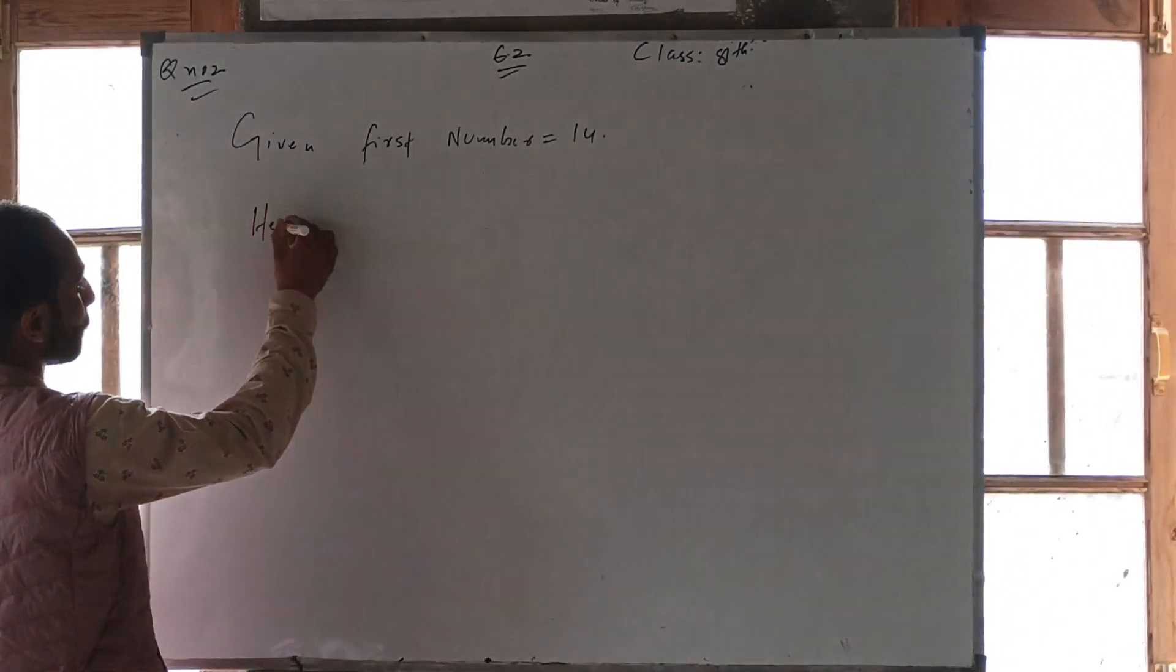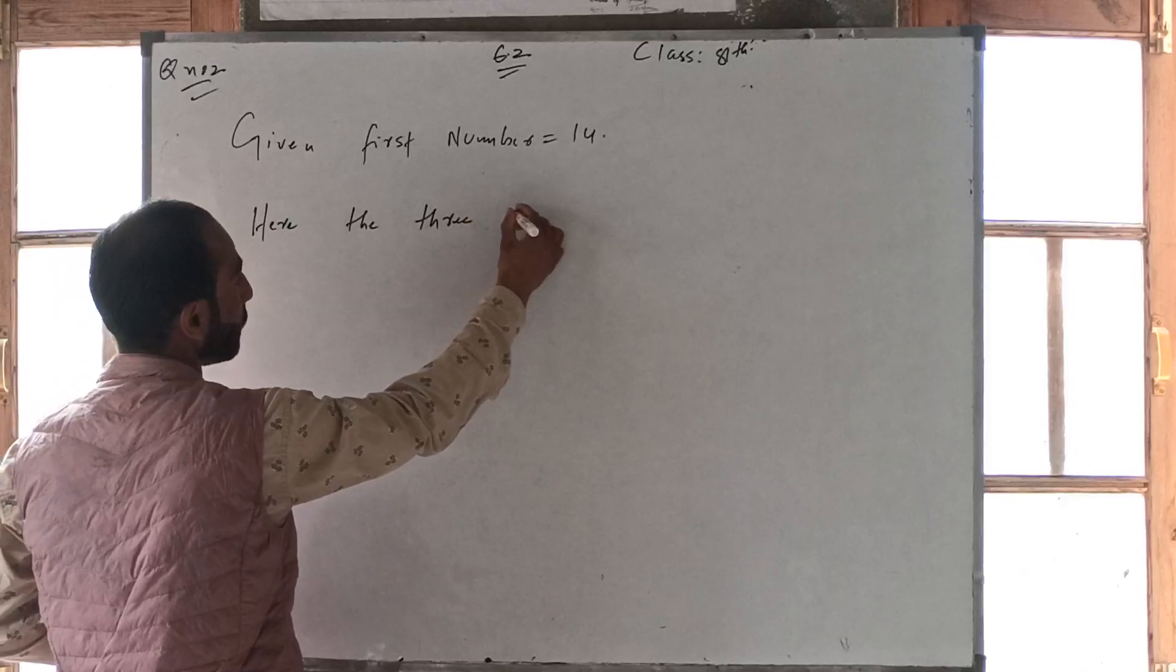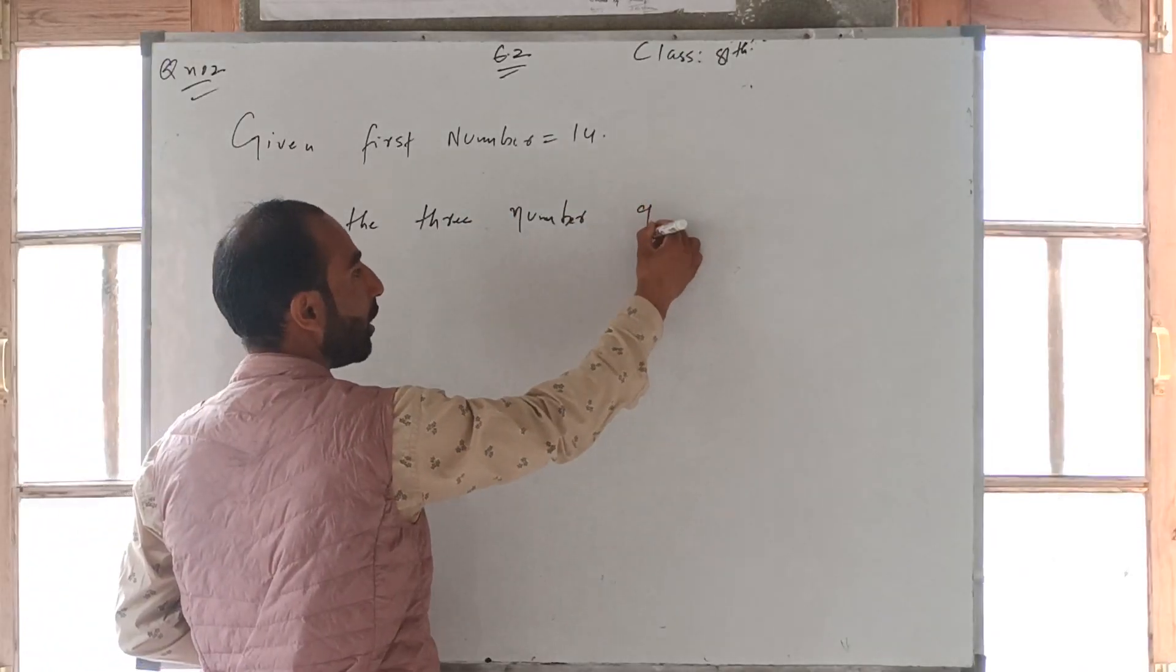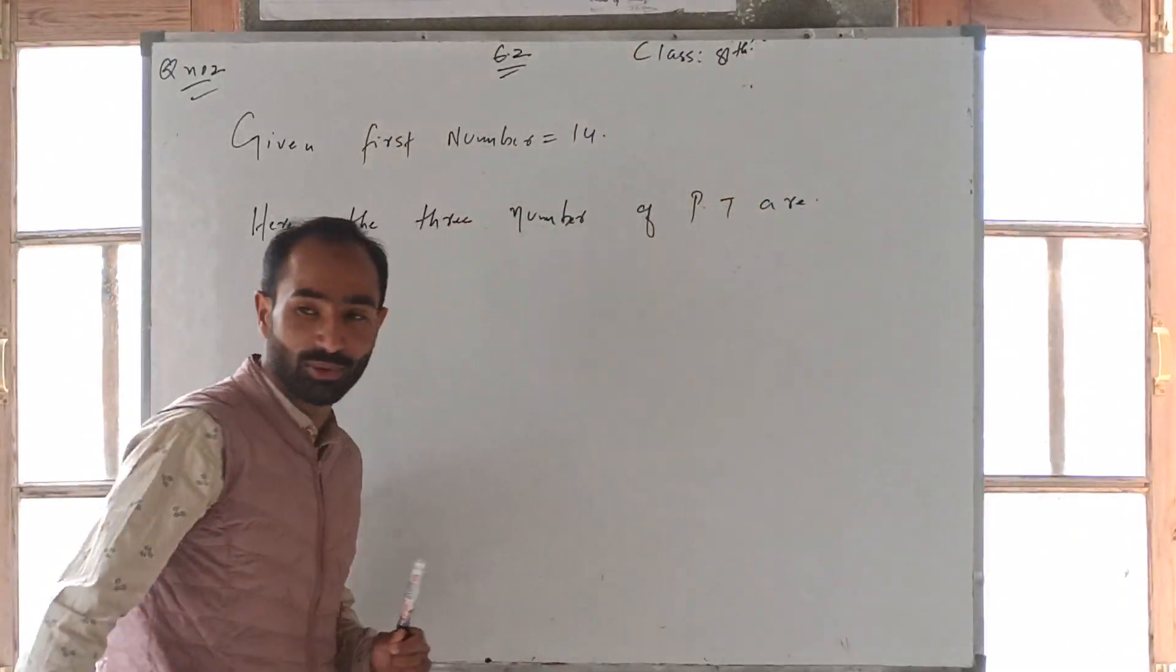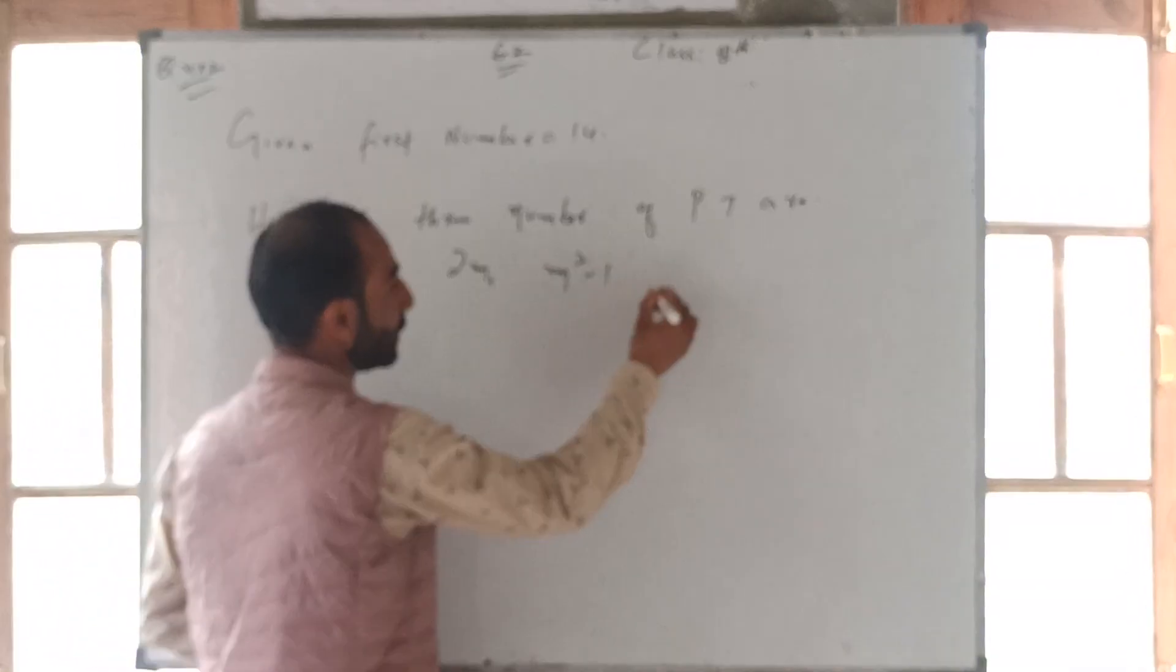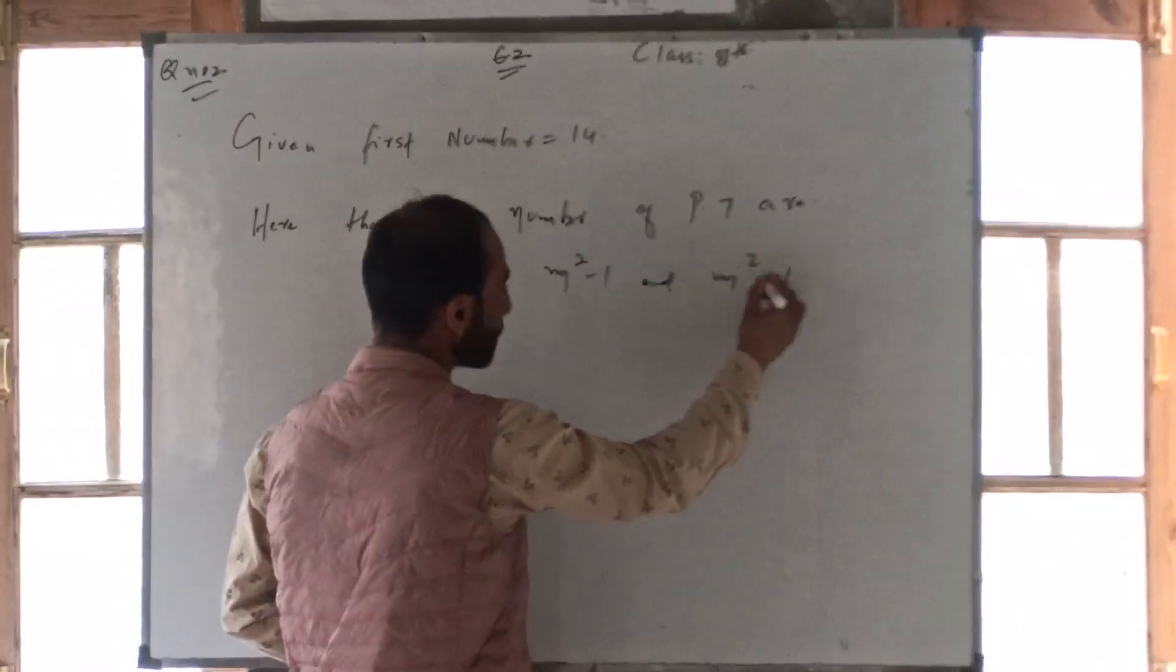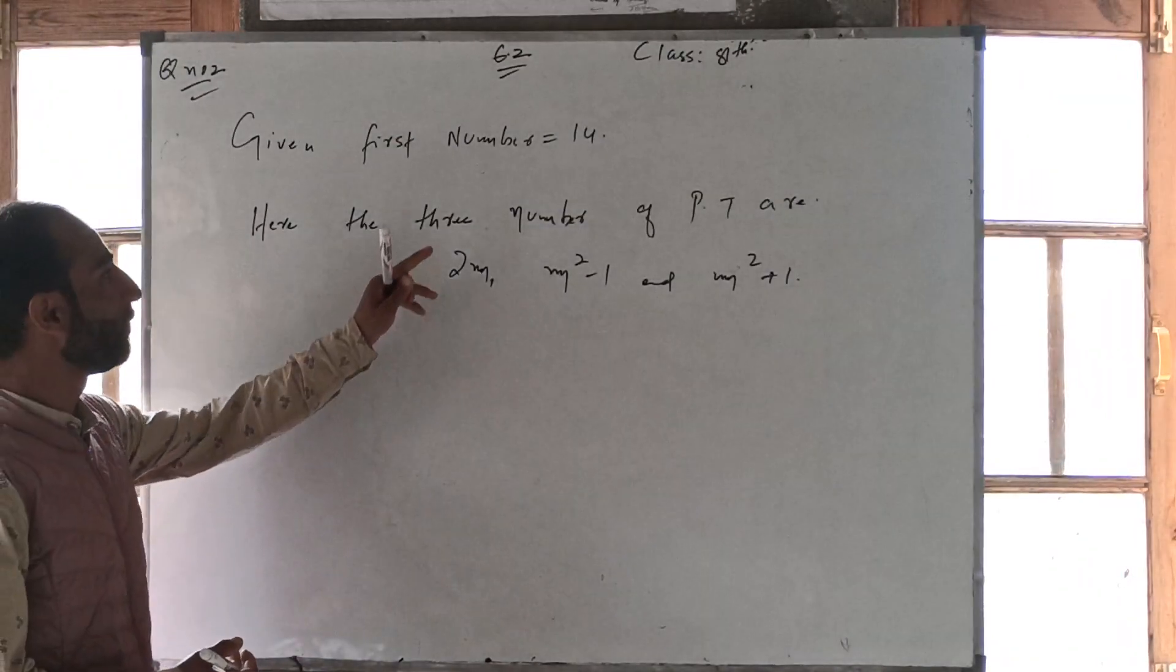Here the three numbers of Pythagorean triplet are: first number is 2m, second is m square minus 1, and third number is m square plus 1. So first number is given.